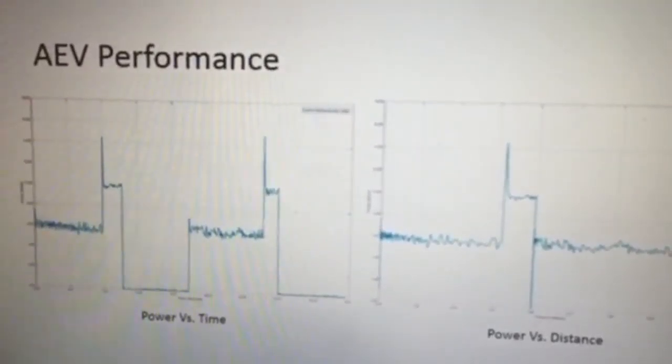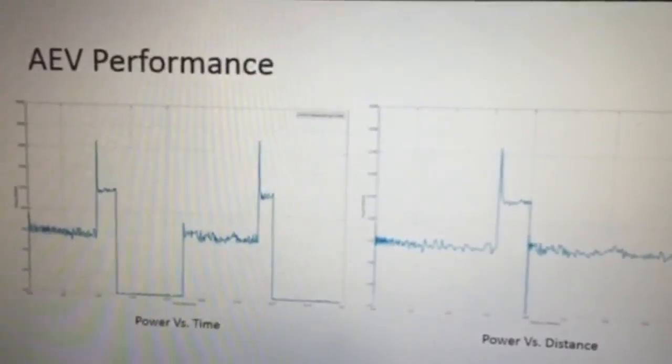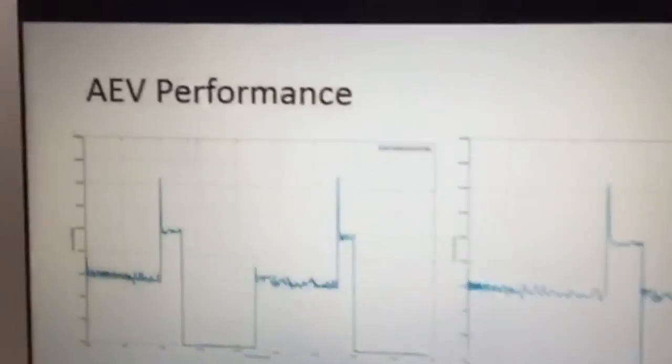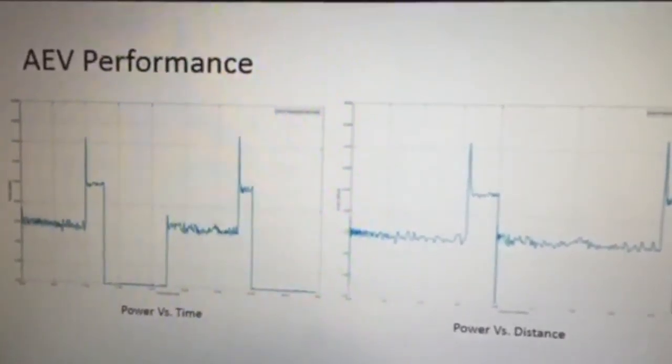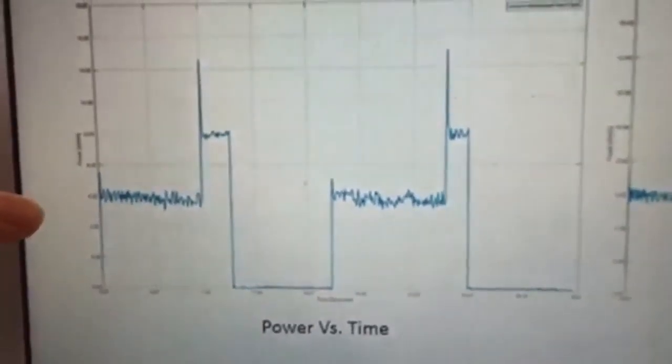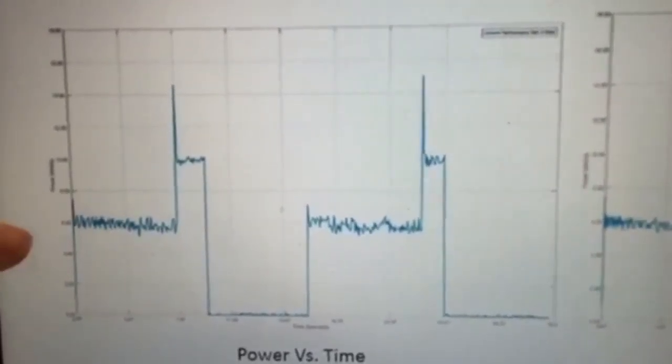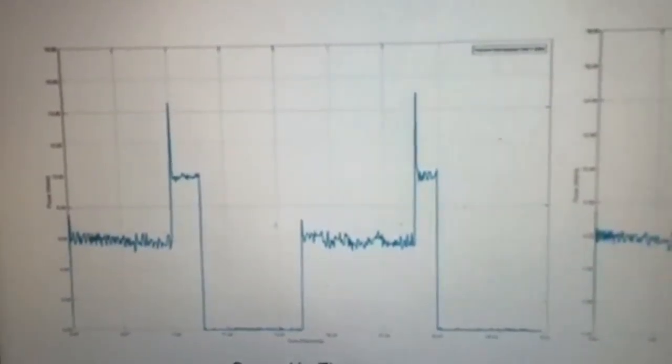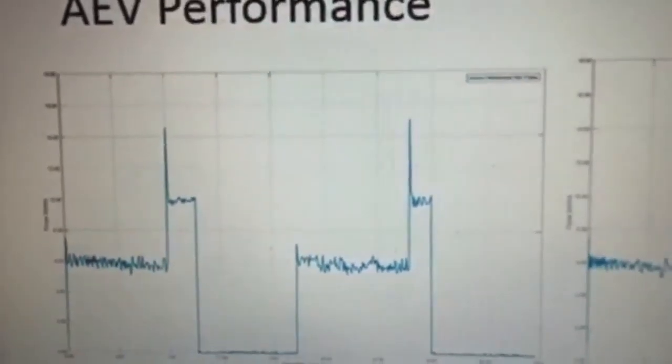Once the final design was selected, the team went into a more in-depth analysis by analyzing how the code ran on our selected design. This power versus time and power versus distance graphs demonstrate the efficiency of our selected model. As you can see from the power versus time graph, it clearly illustrates where the AEV was with respect to the course. Towards the beginning of the graph, you can tell that the AEV has just started as the power is consistent.